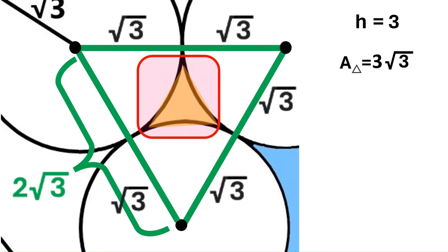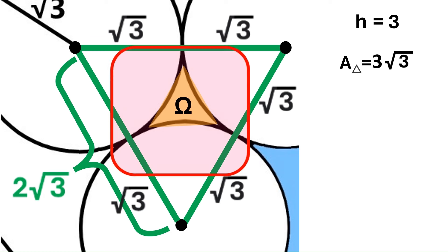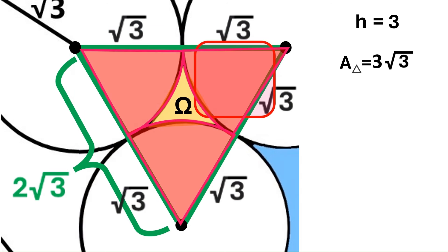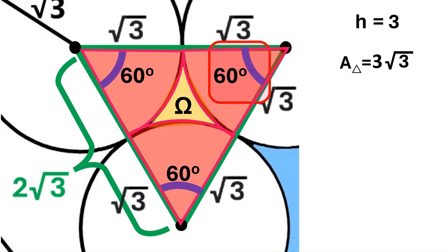Now, we want to find this area. We'll call it omega because it's a very cool Greek letter. The area of the region omega equals the area of this triangle minus the total area of these red sectors around it. These sectors are the sectors of the three identical circles, and their angles are 60 degrees because they are on the corners of the equilateral triangle.